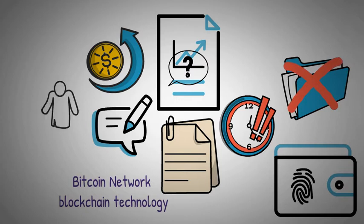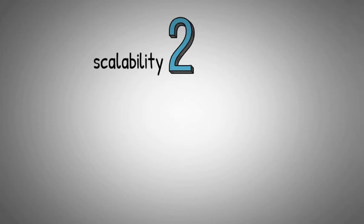But what is wrong with this picture? There are two main things. The first one has to do with scalability and the other one has to do with anonymity. Those are two major issues of the Bitcoin network.